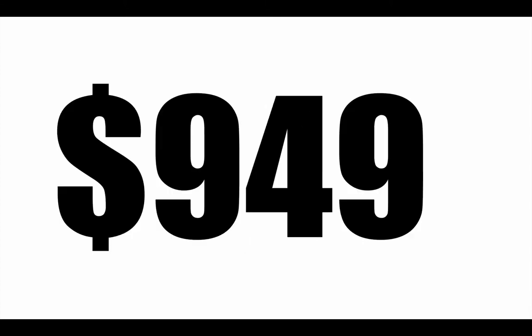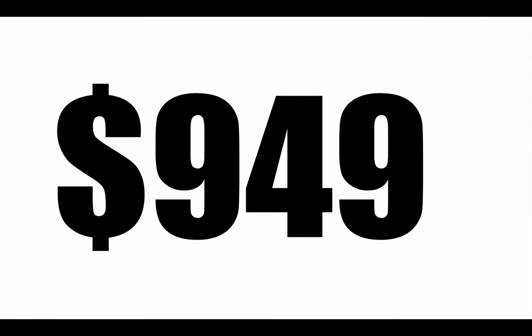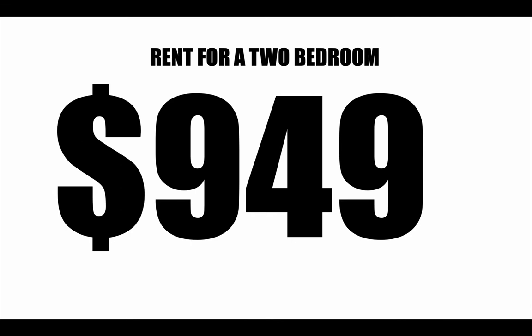What if we based it on a different number — an estimate on rent? Specifically, rent for a two-bedroom apartment. What if we based the federal poverty line on that, and said the FPL should be no more than about a third of your income? How would we figure out what the new federal poverty line would be?